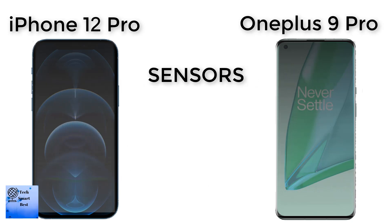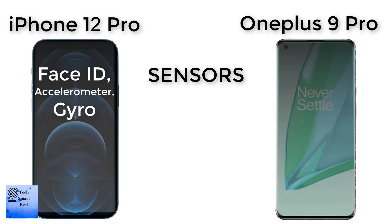The features comparison between both smartphones. The sensors of the OnePlus 9 Pro include fingerprint under display (optical), accelerometer, gyro, proximity, compass, and color spectrum. The sensors of the Apple iPhone 12 Pro include Face ID, accelerometer, gyro, proximity, compass, barometer, and natural language command and detection.